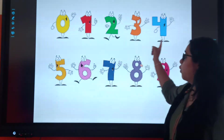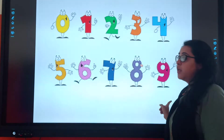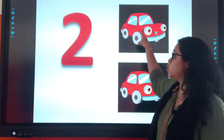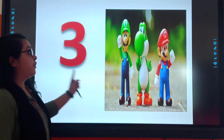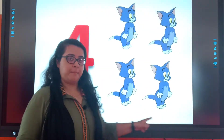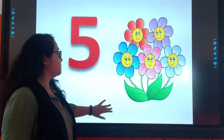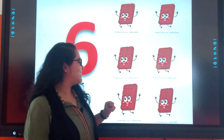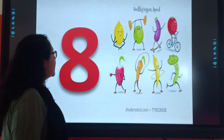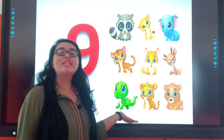1, 2, 3, 4, 5, 6, 7, 8, 9. Remember? 1 cycle, 2 cars, 3 friends, 4 tongs, 5 flowers, 6 chocolates, 7 vegetables, 8 fruits, and 9 cute little animals.